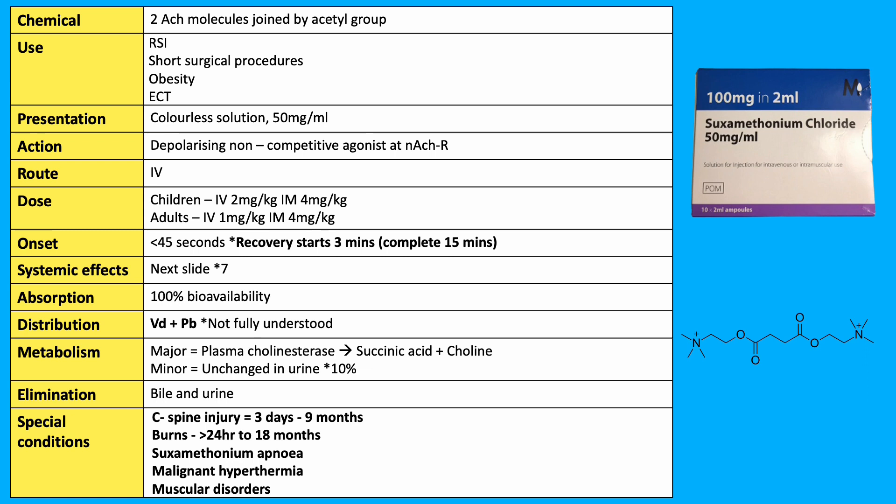Dose varies by age. For children, the IV dose is 2mg per kg. For adults, the IV dose is 1mg per kg. The IM dose is the same for both at 4mg per kg.